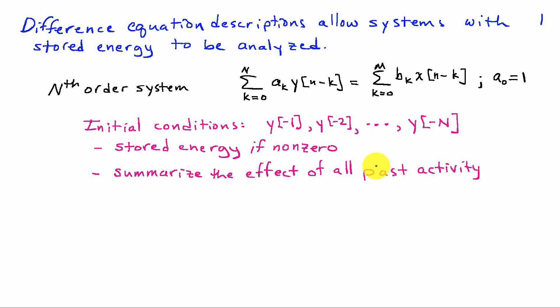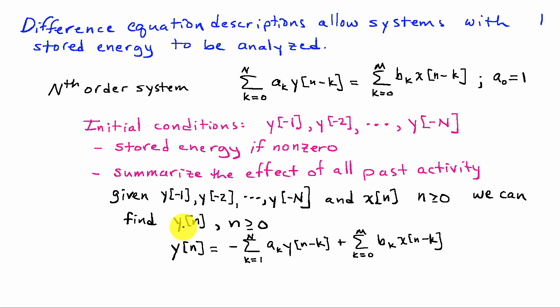We have discussed how to solve this system in a computational way — in other words, recursively compute the output given the input and a set of initial conditions. These initial conditions represent any stored energy in the system. They tell us the entire effect of all past activity on the system. I don't need to know what happened in the past if I know these initial conditions. If I have these initial conditions and the input for times greater than 0, I can find the output by solving for y of n in terms of past values of y and the input.